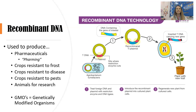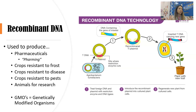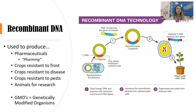We use recombinant DNA in everything. Pharming — spelled with a P-H — uses recombinant DNA to create medicines. We create crops resistant to frost, disease, and pests, and various types of transgenic animals used for research, like transgenic mice used for researching diabetes. Anytime you hear the phrase GMO — genetically modified organism — that is a transgenic organism. A lot of corn sold in the U.S. is GMO corn, with a gene from another organism inserted to make it grow faster, bigger, or resistant to pests.